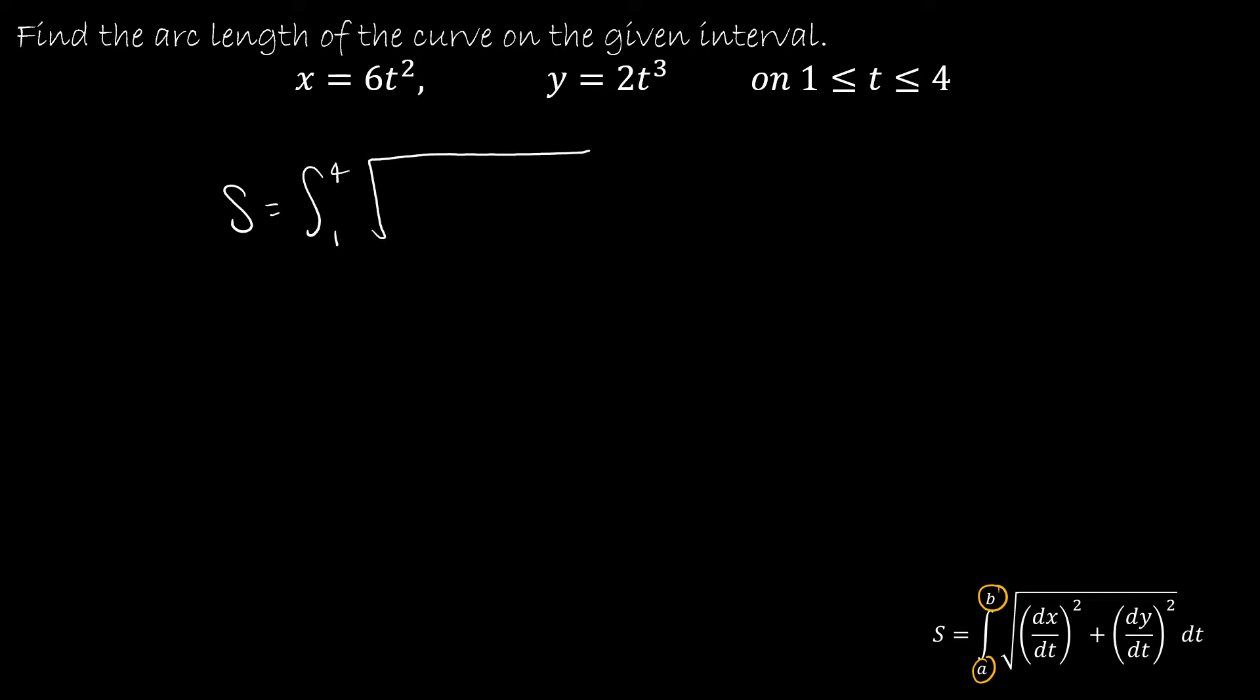So I'm trying to find the arc length from 1 to 4 of the square root, and now we have to find dx/dt, which is the derivative of x with respect to t. So x is a function of t, and that gives me 12t, and I also need to find dy/dt, which is 6t².